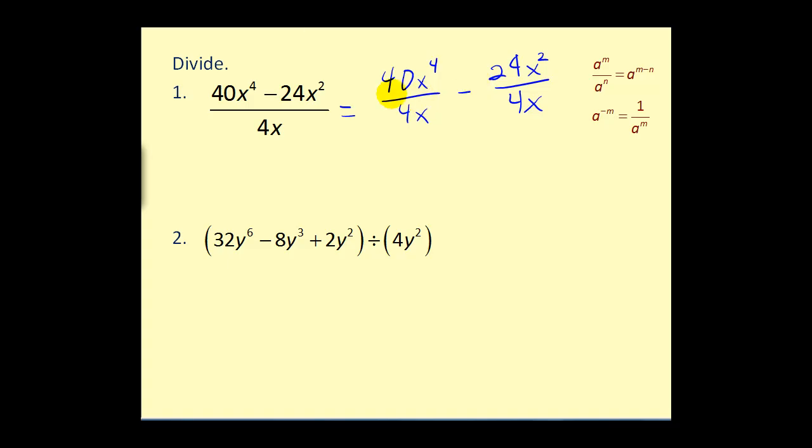Well, this simplifies nicely. Forty divided by four would give us ten. x to the fourth divided by x to the first, remember we subtract our exponents, that would give us x to the third. Twenty-four divided by four equals six, and x to the second divided by x to the first would equal x to the first, or just x.